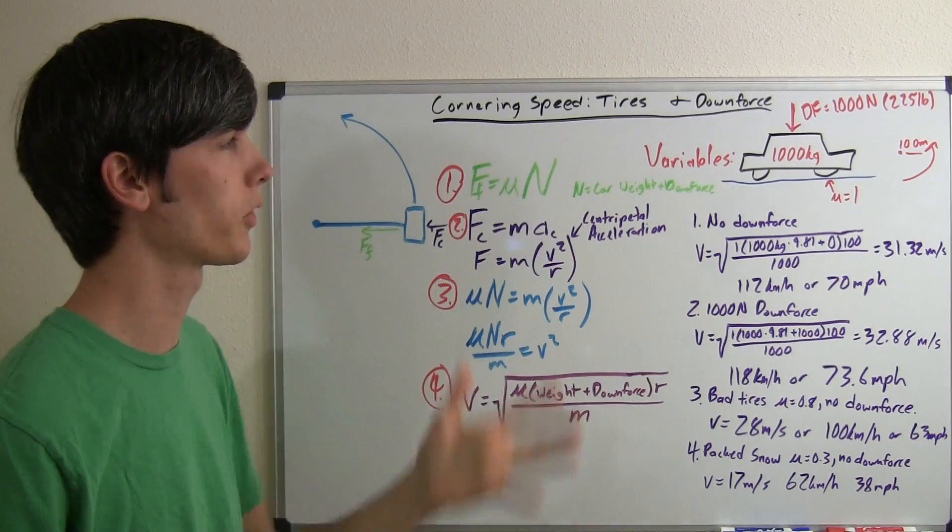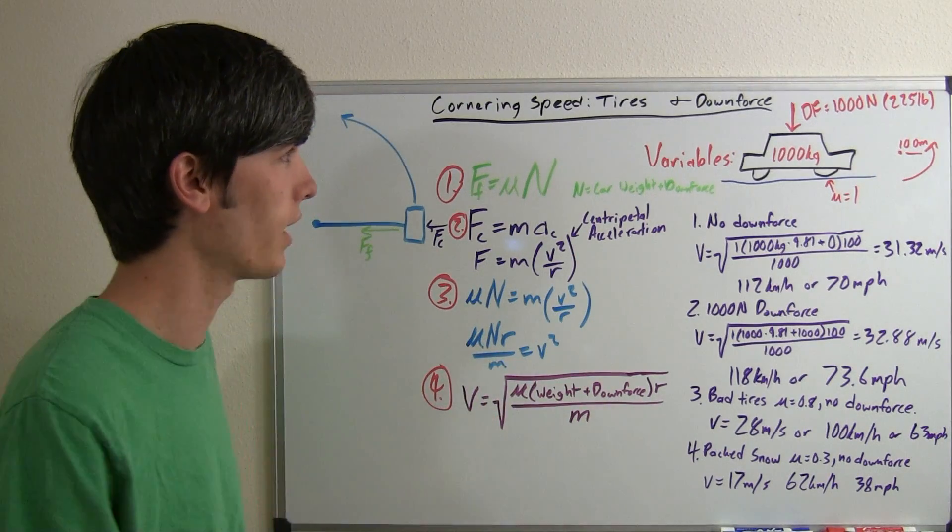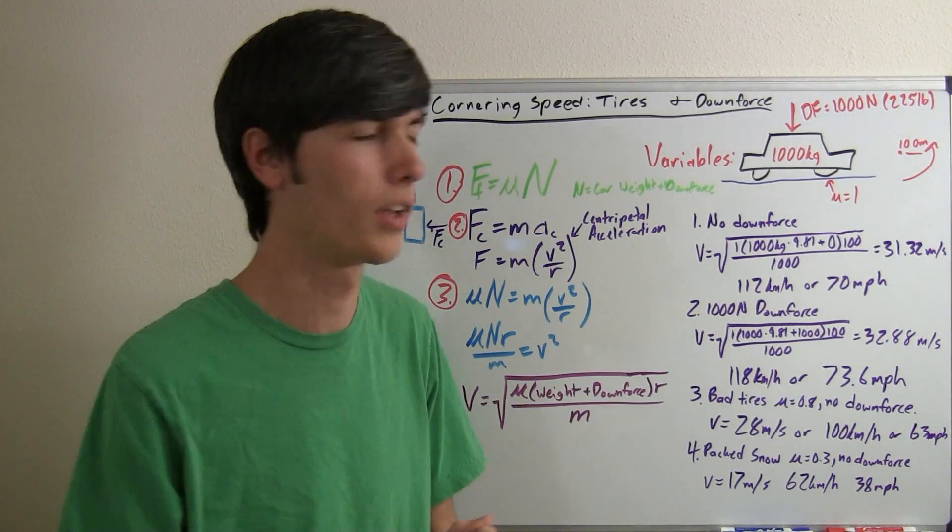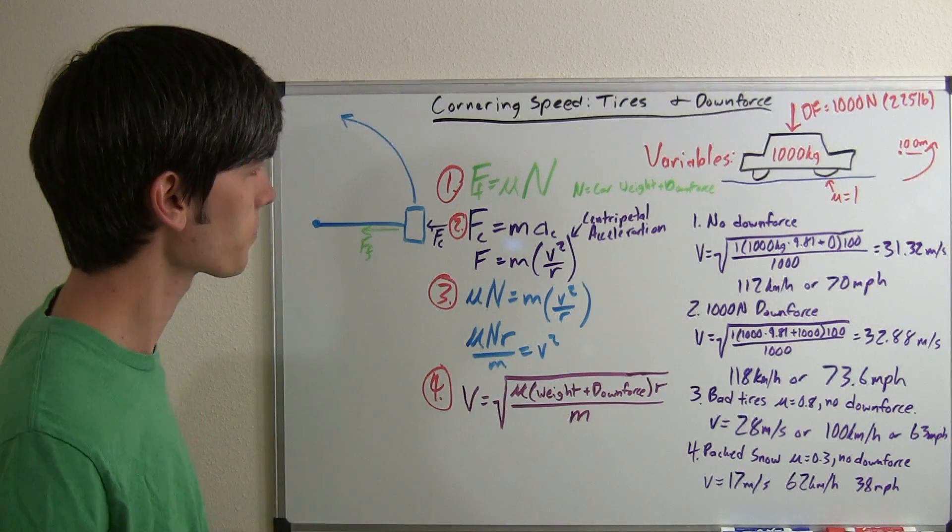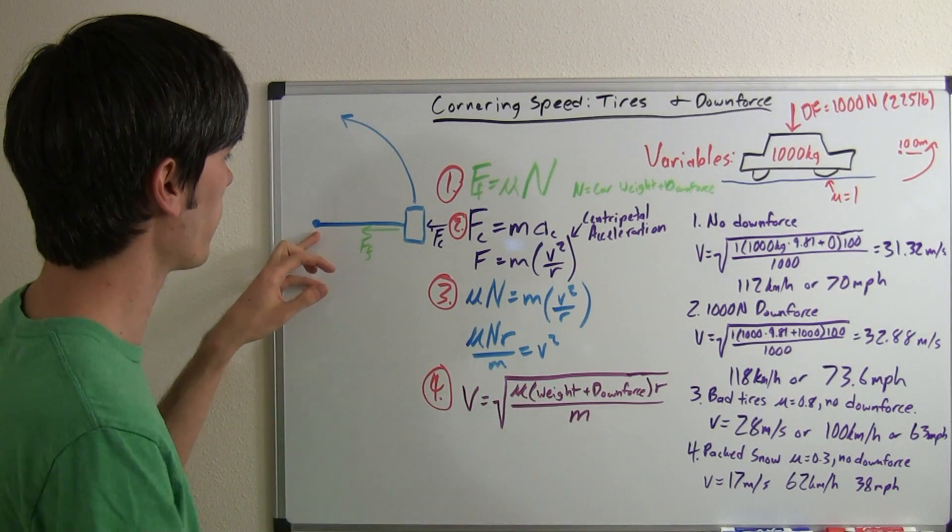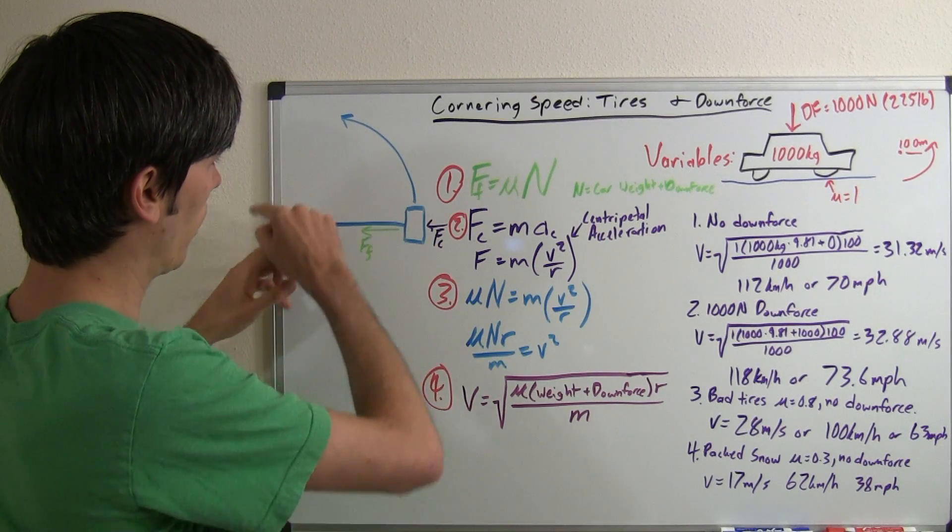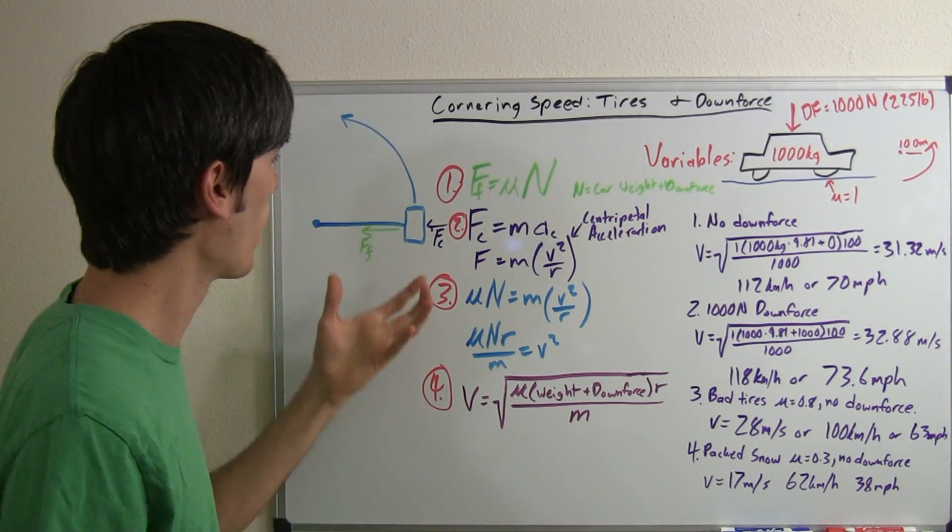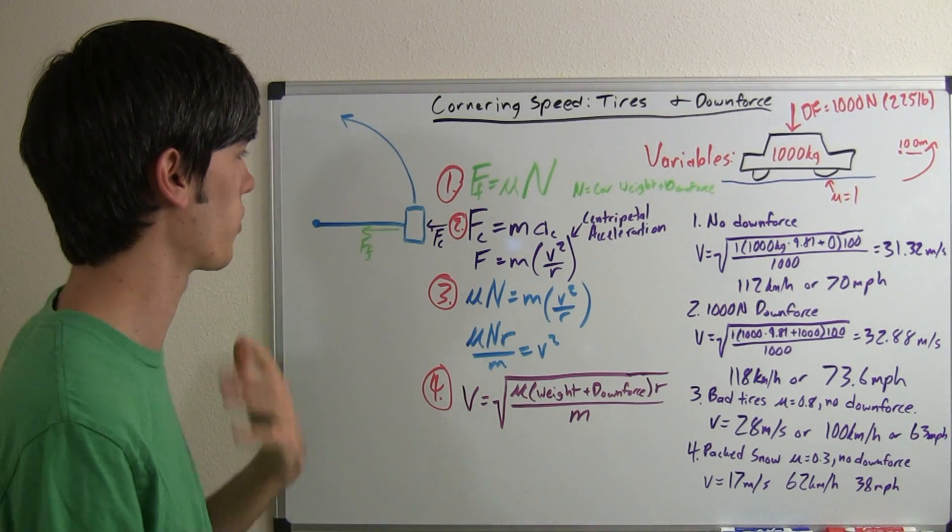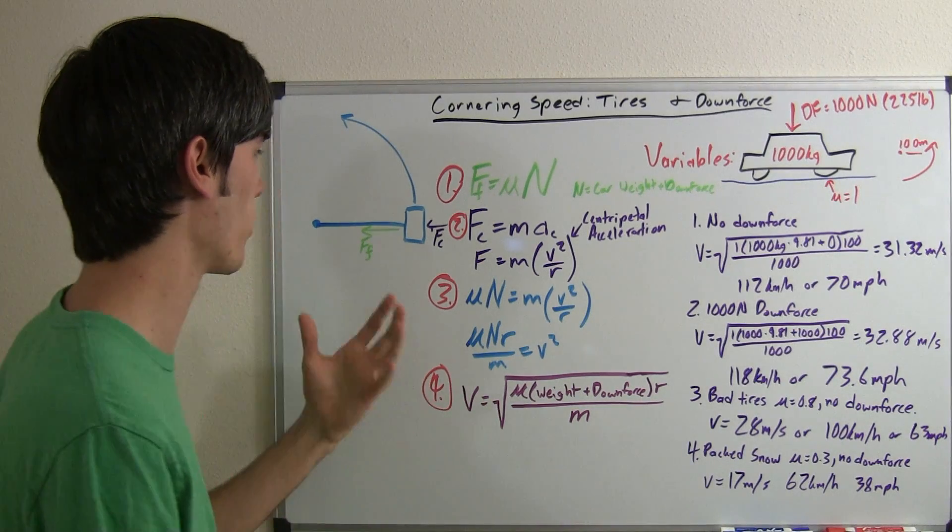So I'm going to be talking about maximum cornering speed, and how tires and downforce affect the cornering speed of a car. Basically what you've got going on is you've got a point at which your car is going around a circle, and it can go around a circle at a certain speed depending on multiple variables.